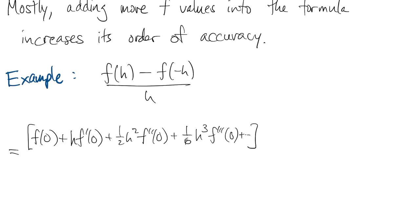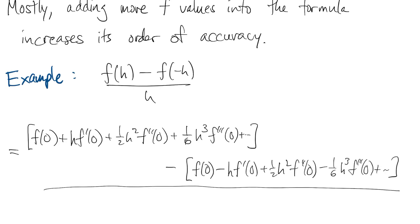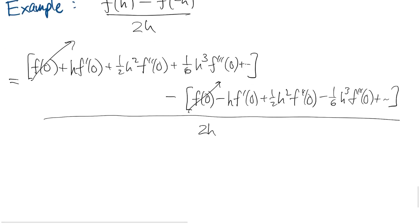This time I expand the first term out to one higher degree in h, and the second term is the same series with negative h in place of h. Once again, the f of zero terms cancel. The terms in h combine to give f prime of zero. The terms in h squared cancel out, in fact all the even powers will.